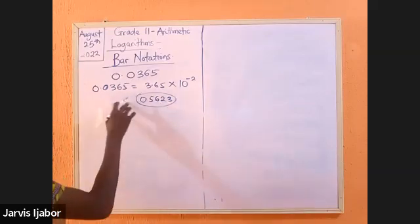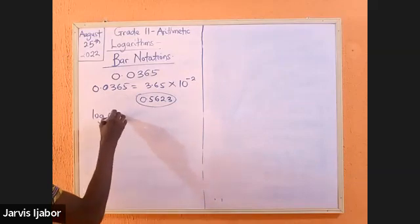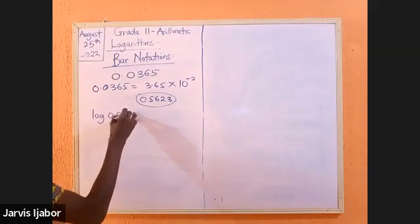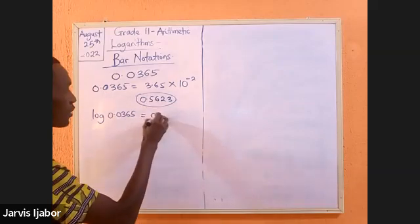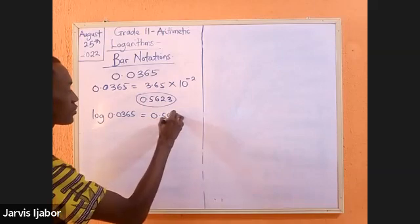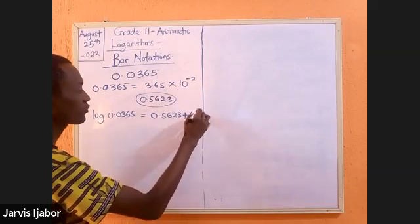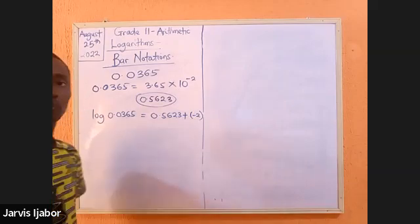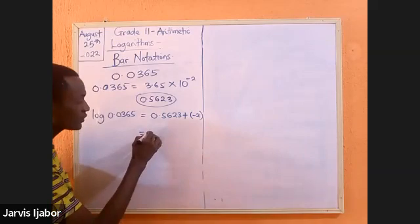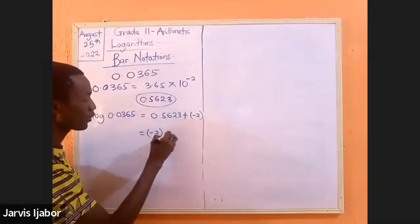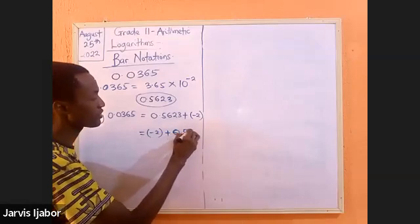So it will mean that the log of 0.0365 will be equal to 0.5623 plus a negative 2, which I can write to be negative 2 plus 0.5623.